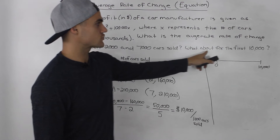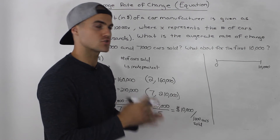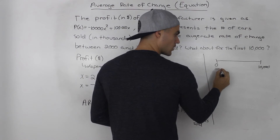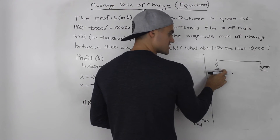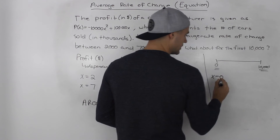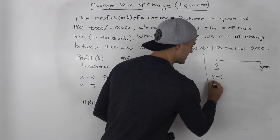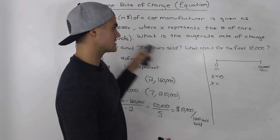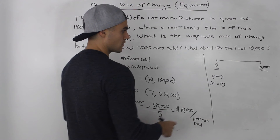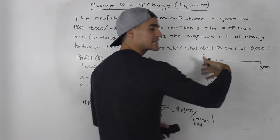For the second part — what's the average rate of change for the first 10,000 cars sold? The average rate of change is always between two points, so whenever you see 'the first 10,000,' it's between 0 and 10,000 cars sold. Since x is in thousands, the two x values are x = 0 and x = 10, giving us the average rate of change for the first 10,000 cars sold.